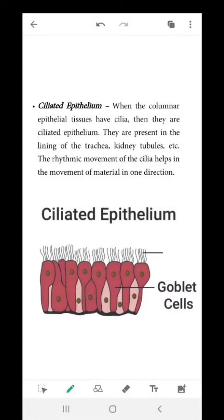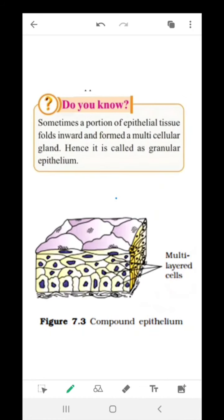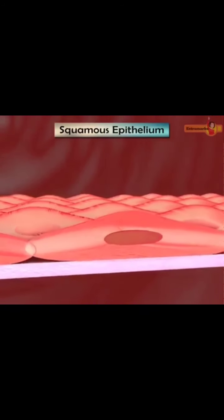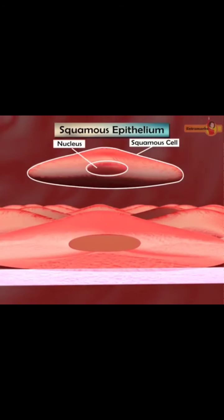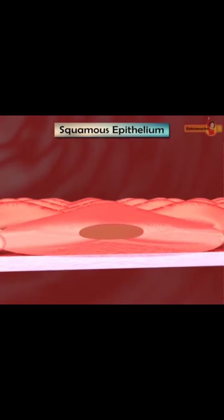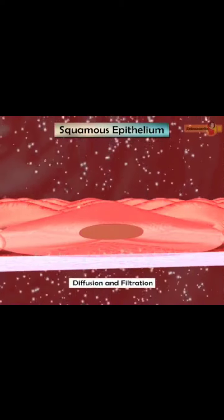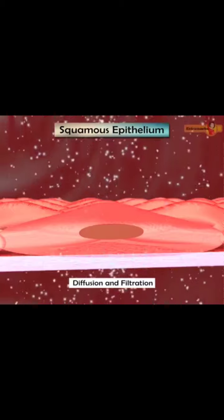Ciliated epithelium is present in the lining of the trachea, which is part of the respiratory system. The rhythmic movement of the cilia helps in the movement of material from one direction to another. Glandular epithelium is also known as compound epithelium — multi-layered cells arranged one over the other. Squamous epithelium tissue is composed of a single layer of flattened cells resting on the basement membrane with a disc-shaped central nucleus and sparse cytoplasm.